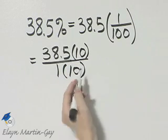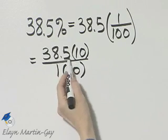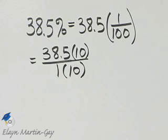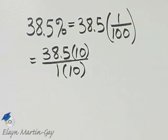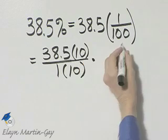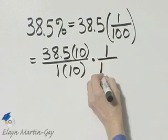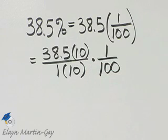Now, why did I do that? I know multiplying this number by 10 moves the decimal point one place to the right, and I'm okay as long as I multiply the numerator and the denominator by that same number. Then I still have times 1 over 100.